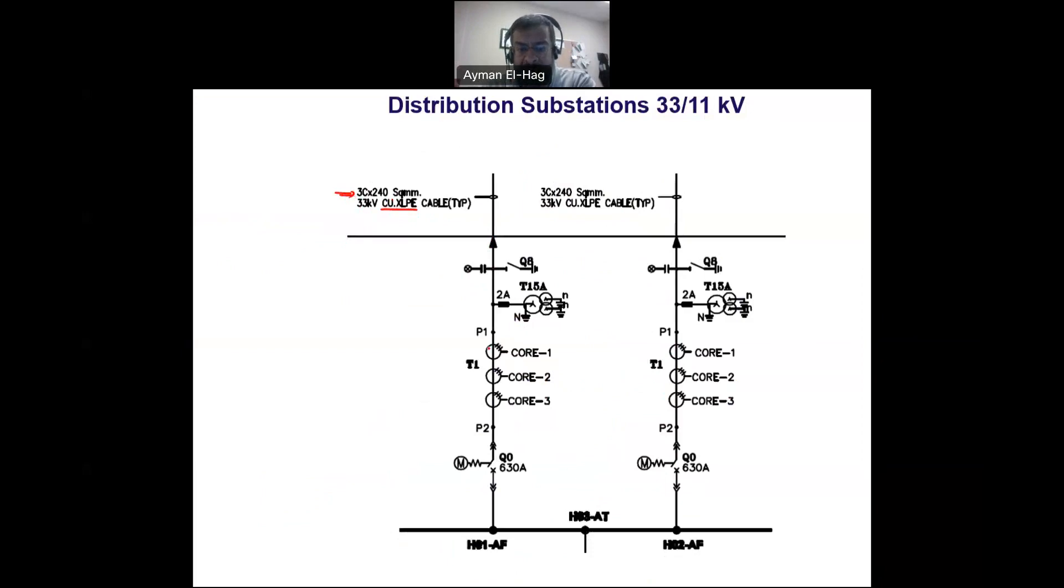Here we have core 1, 2, 3. These are actually current transformers. We have three current transformers in each phase to measure the current at the high voltage side. We also have a PT or potential transformer to measure the voltage at the high voltage side. It's very important to measure the currents and voltages at both the 33 kilovolt and the 11 kilovolt busbars.